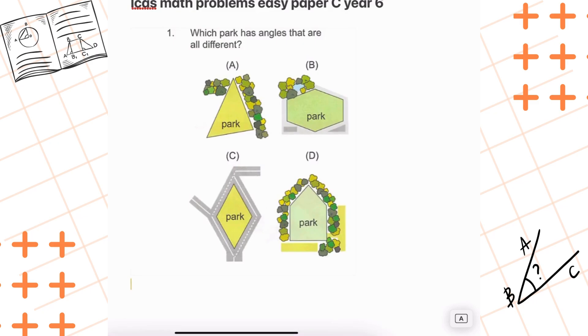Let's start with park A. Park A is shaped like a triangle. Now remember, in a triangle we can have all different angles. So this one might be our answer, but we'll come back to it.